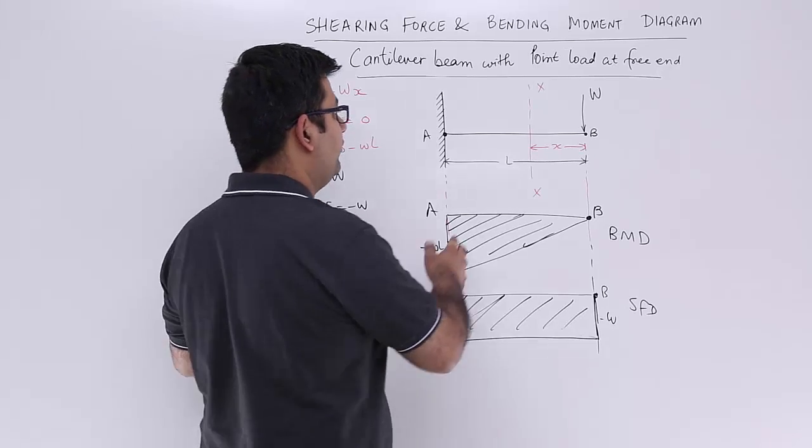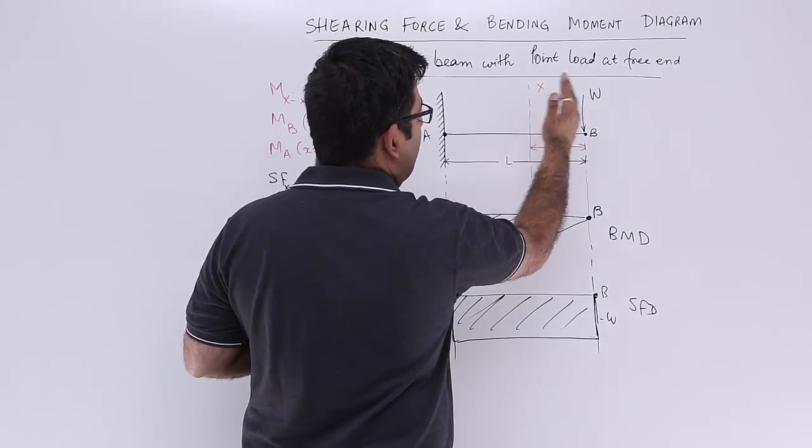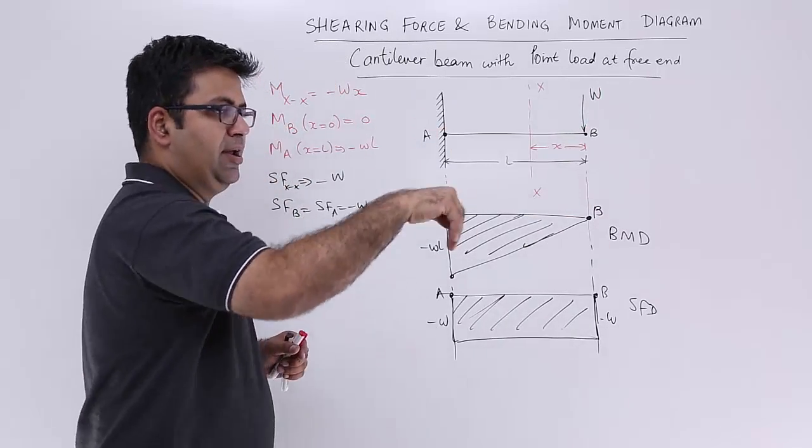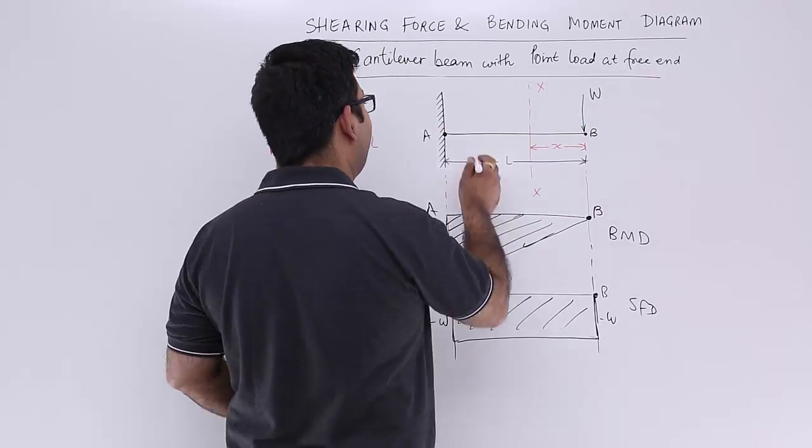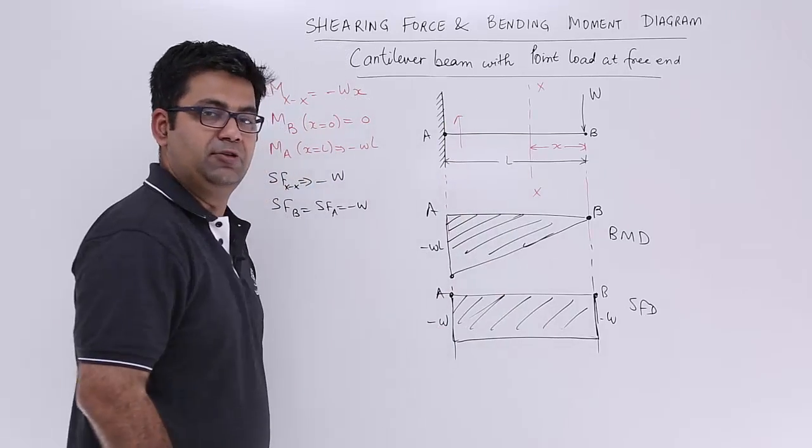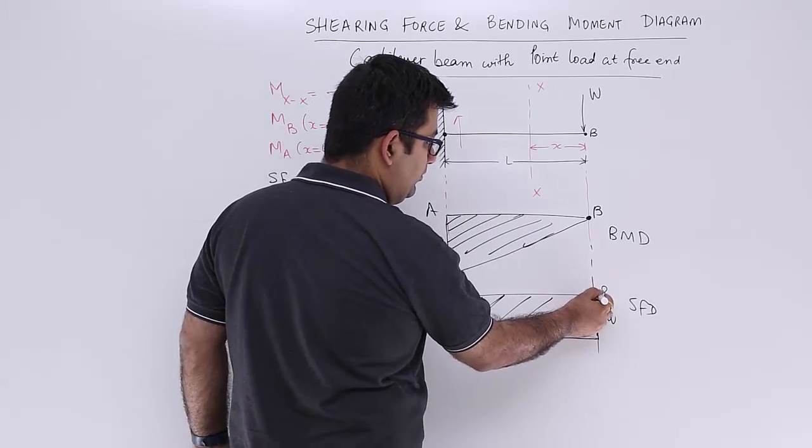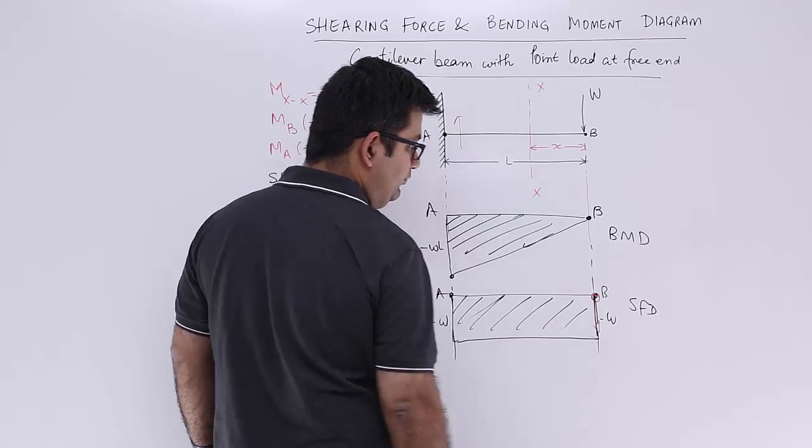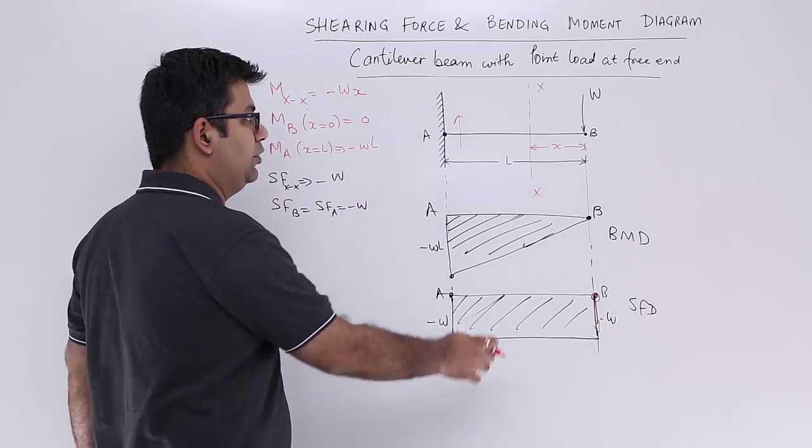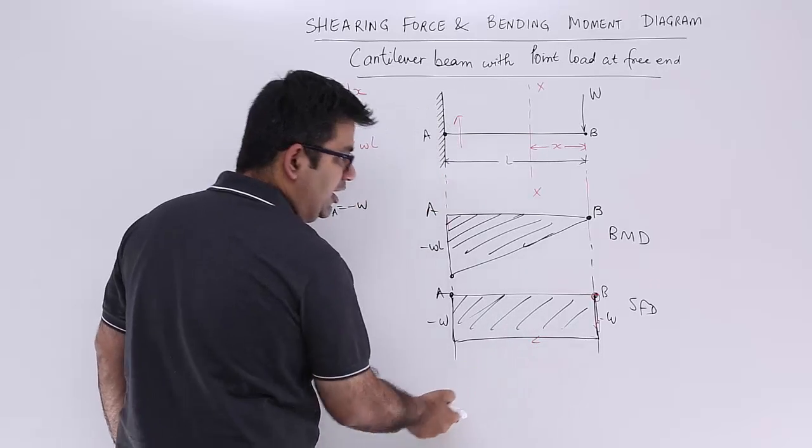Meaning that if you take this section towards the right, you have a net force downward. So towards the right and left, you have a net force upward. So if you start from this point, go down, that is what it is indicating. Till point a there is no variation.